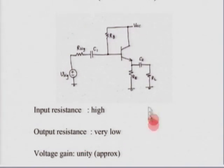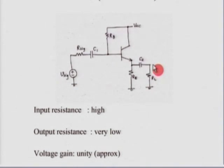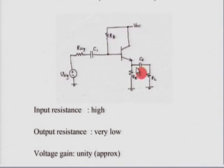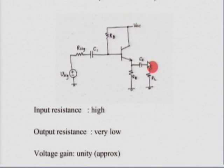The output resistance is quite low. This is because the output is taken from the emitter. Recollect that for both the common emitter and common base, the output was taken from the collector, which was a controlled current source, giving high resistance. Here, however, we are taking the output from the emitter, and the impedance looking into the emitter is quite small. So the output resistance is quite small.